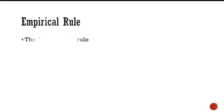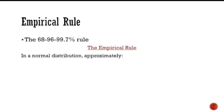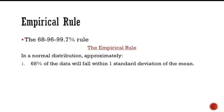The empirical rule is a statistical rule stating that the majority of the data will fall within three standard deviations of the mean. As a reminder, standard deviation is the measure of how spread out the data is. The empirical rule, or the 68-95-99.7 percent rule, is as follows: for any normal distribution, approximately 68 percent of the data will fall within one standard deviation of the mean.